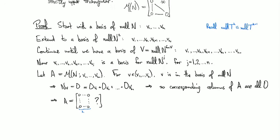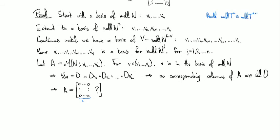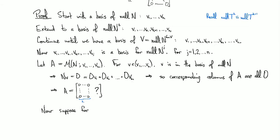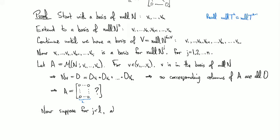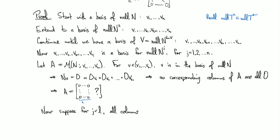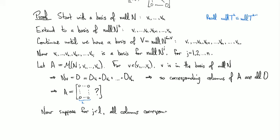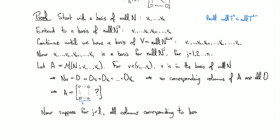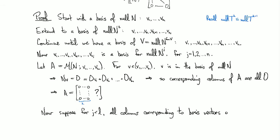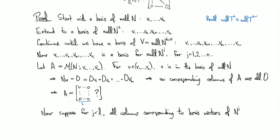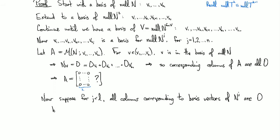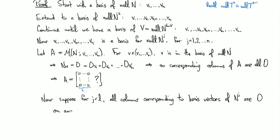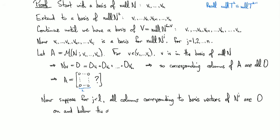And now we're going to proceed basically by induction on the power that we're raising the matrix to. So now let's suppose that for J strictly less than L, all columns corresponding to the basis vectors of N to the J are zero on and below the diagonal.